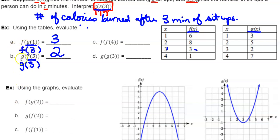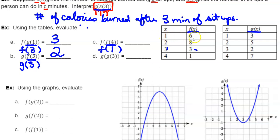Nothing says you have to use two different functions in a composition — there are times you compose a function with itself. For f of f of 4, work from the inside out. When x equals 4 on the f table, the matching y value is 1, so f of 4 equals 1. Now take that 1 and plug it back into the f function. When x equals 1, the matching y value is 6. Therefore, f of f of 4 equals 6.